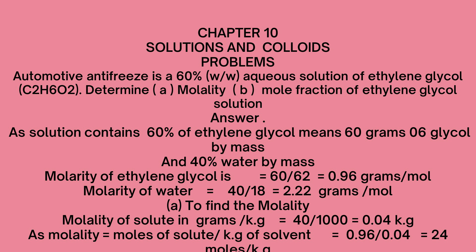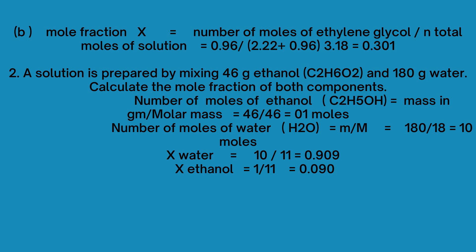Now for part B, we calculate the mole fraction. The mole fraction formula is moles of solute divided by total moles of solution. The mole fraction of ethylene glycol equals 0.96 moles divided by the total — 2.2 moles of water plus 0.96 moles of ethylene glycol — giving 3.18 total moles. So 0.96 divided by 3.18 equals 0.301. This is the mole fraction of ethylene glycol.